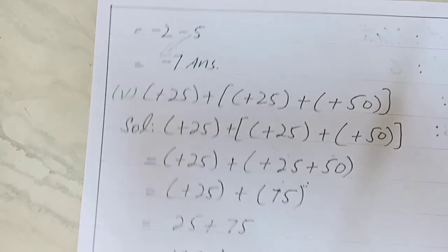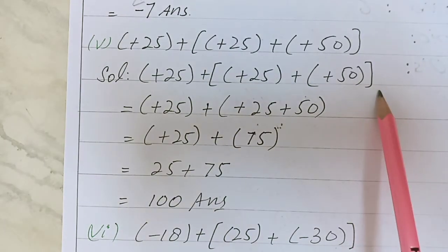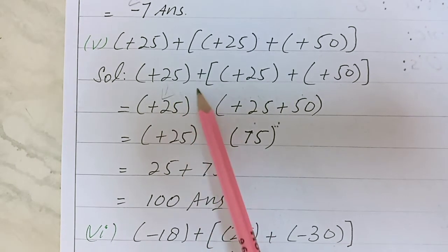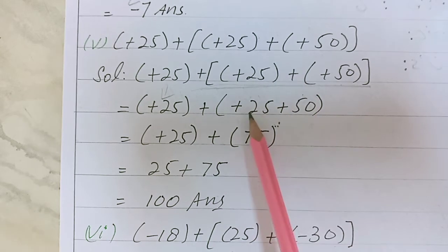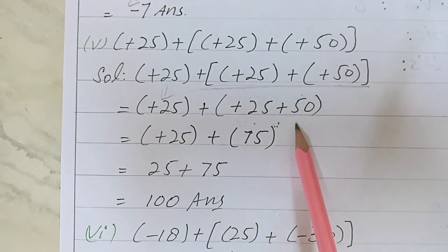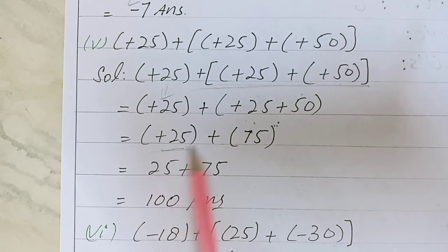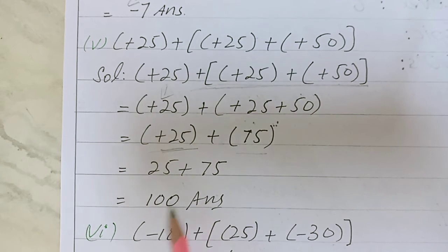Write the question again. First we solve what's in brackets: (+25) + (+25) + (+50) equals +75. Now we have 25 and 75, so the answer is 100.